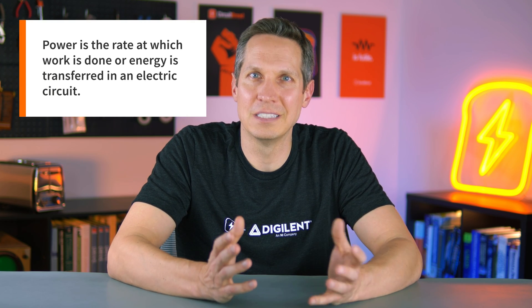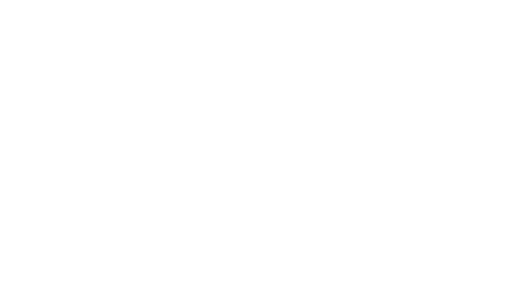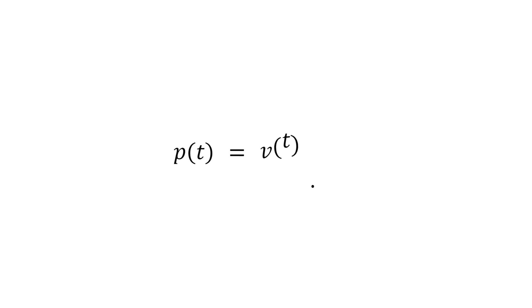Now let's talk about an essential aspect of electrical circuits: power. You often see gadgets or appliances with a wattage or power rating, but what does this mean? Power, or electric power, is defined as the rate at which work is done or energy is transferred in an electric circuit. Mathematically, it's expressed as the product of the current passing through an element and the voltage difference across that element — or more simply, voltage times current equals power. This equation is written as a function of time because power is calculated at a specific instant.